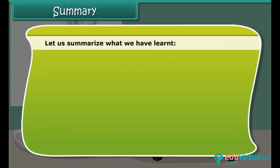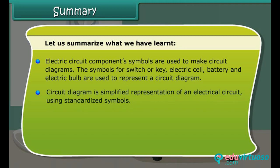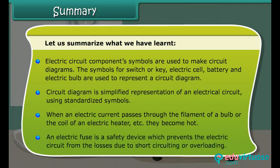Let us summarize what we have learnt. Electric circuit component symbols are used to make circuit diagrams. The symbols for switch or key, electric cell, battery, and electric bulb are used to represent a circuit diagram. A circuit diagram is a simplified representation of an electrical circuit using standardized symbols. When an electric current passes through the filament of a bulb or the coil of an electrical heater, they become hot. An electric fuse is a safety device which prevents the electric circuit from losses due to short circuiting or overloading.